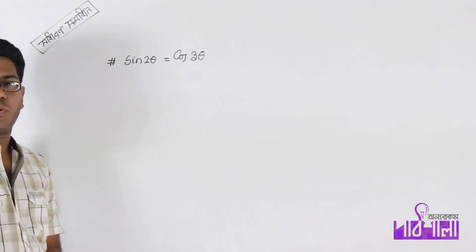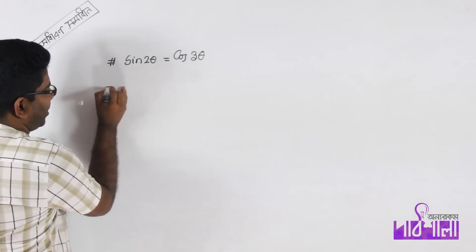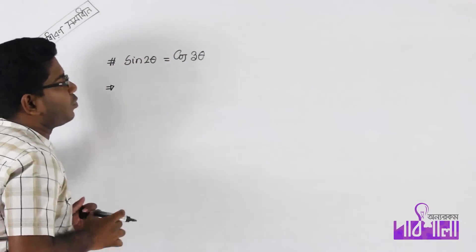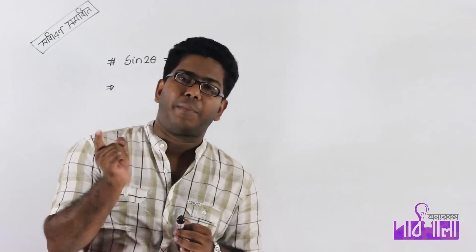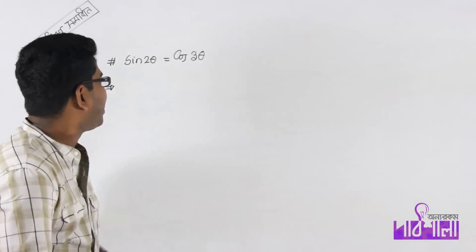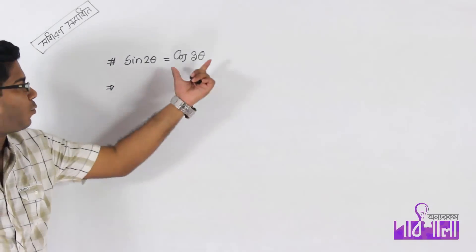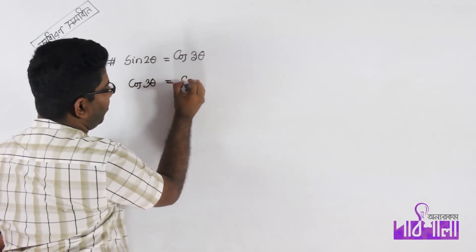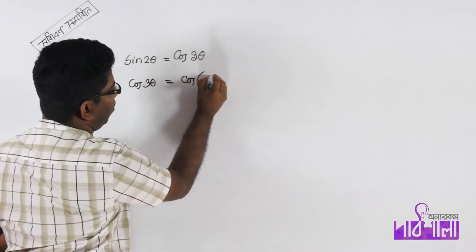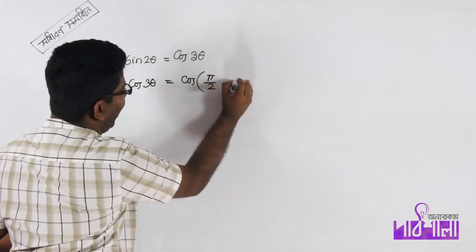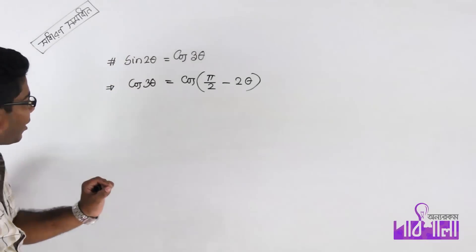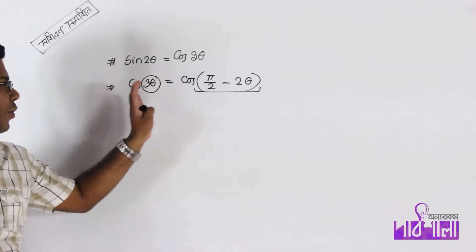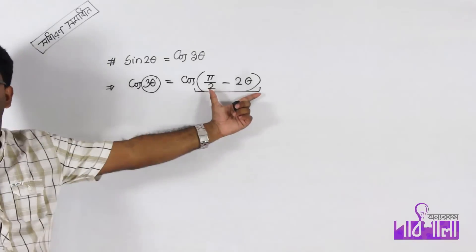New problem: sin 2θ equal to cos θ. We know cos θ can be written as sin(π/2 minus θ), or equivalently cos(π/2 minus 2θ). So the equation becomes cos θ equal to cos(π/2 minus 2θ). This is of the form cos θ equal to cos α.